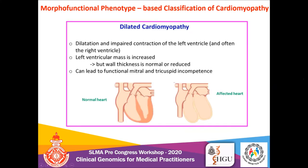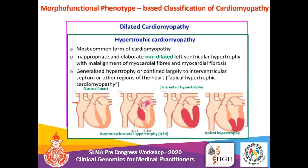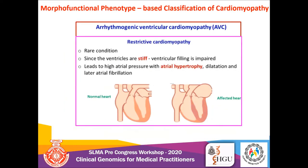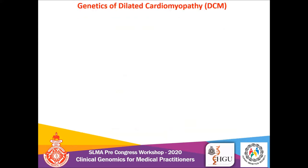An outline of the important features of each cardiomyopathy type is shown on this slide: dilated cardiomyopathy, hypertrophic cardiomyopathy, arrhythmogenic ventricular cardiomyopathy, and restrictive cardiomyopathy.